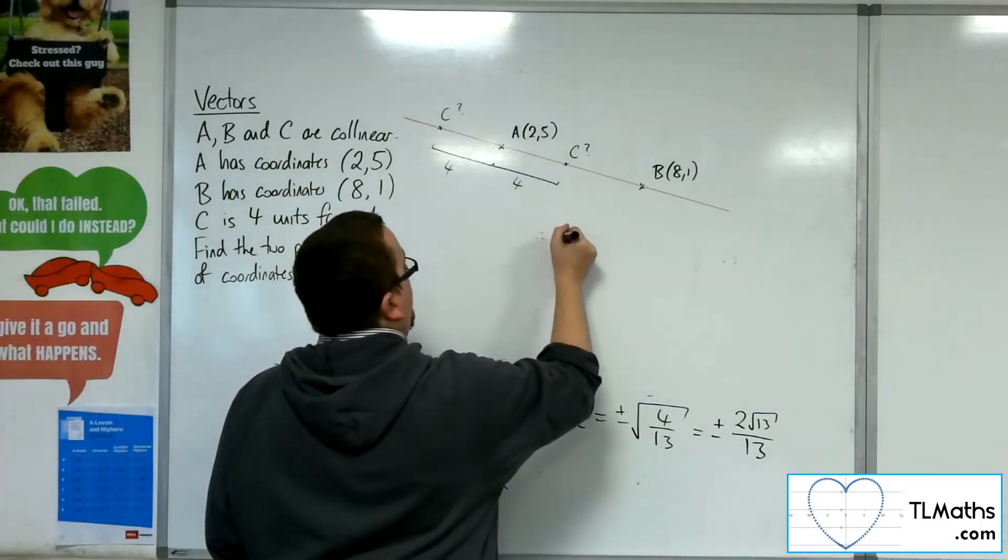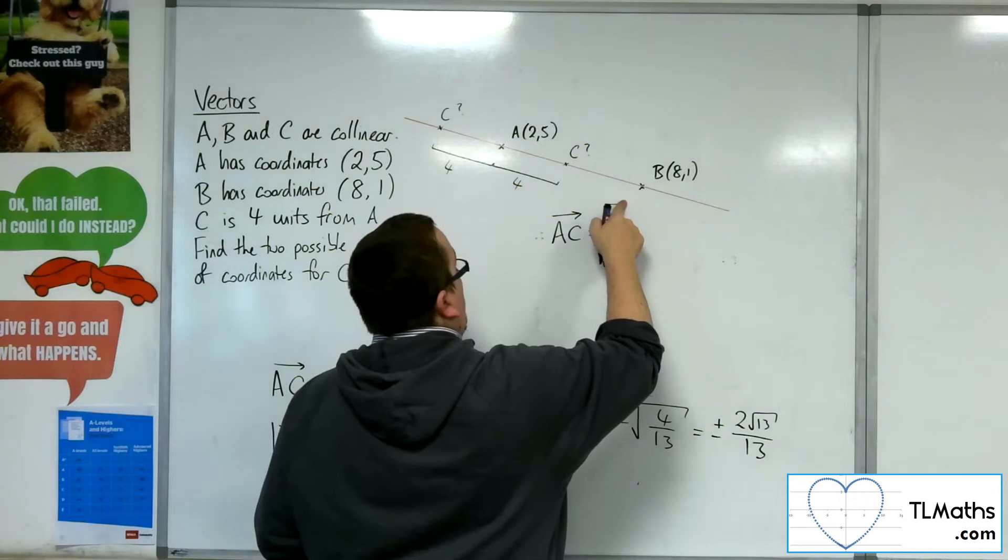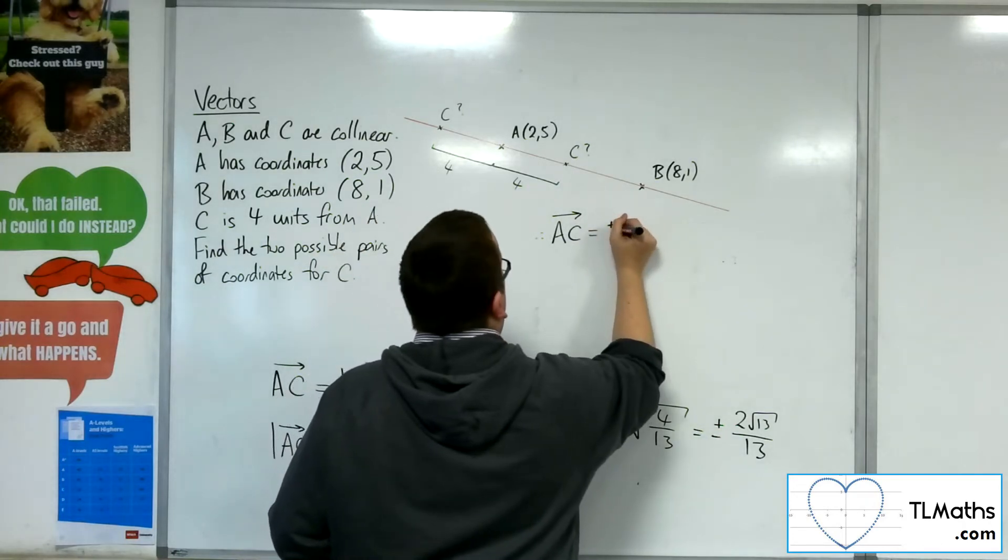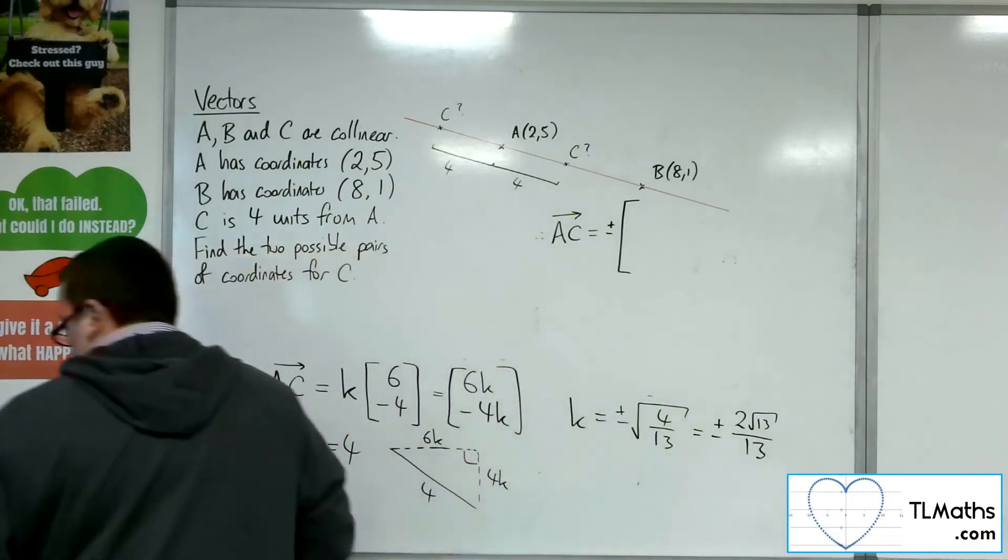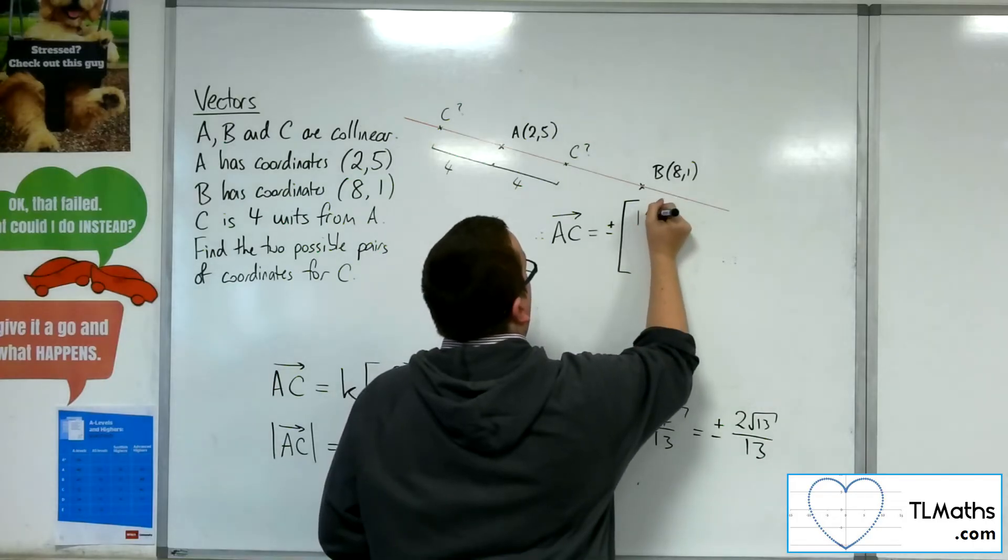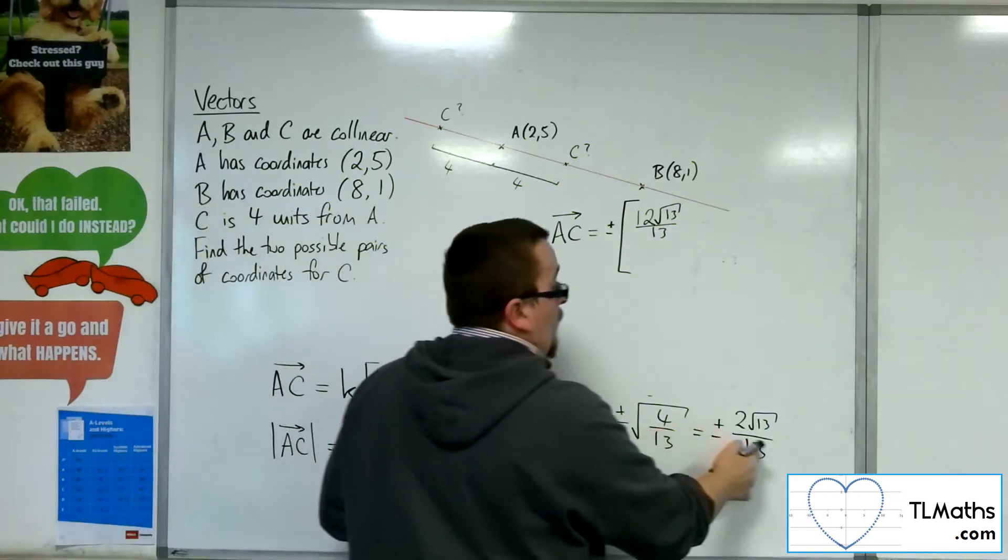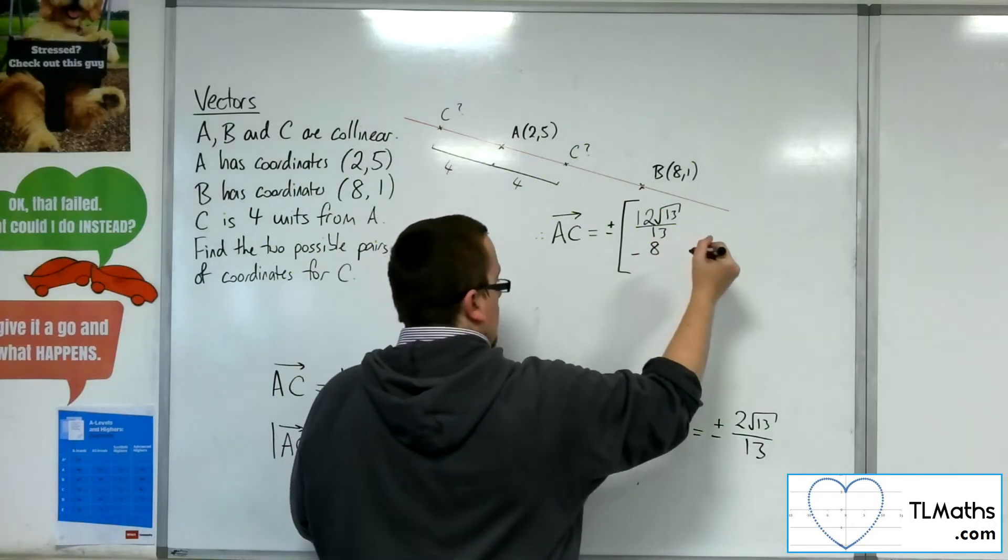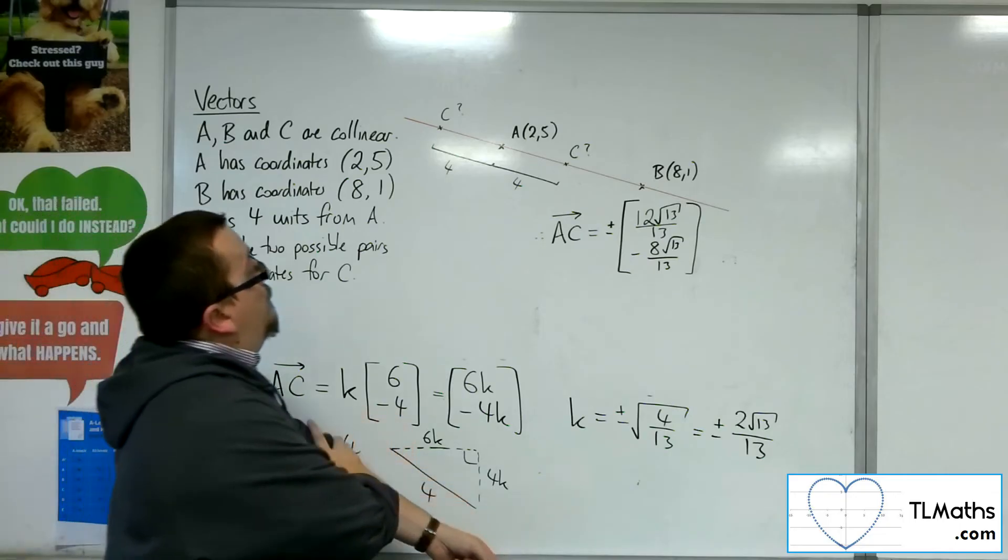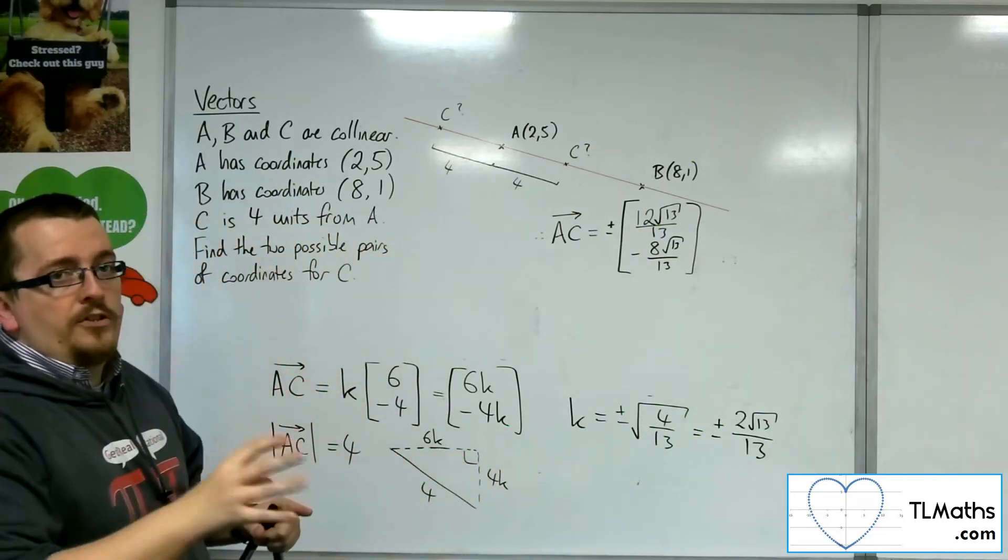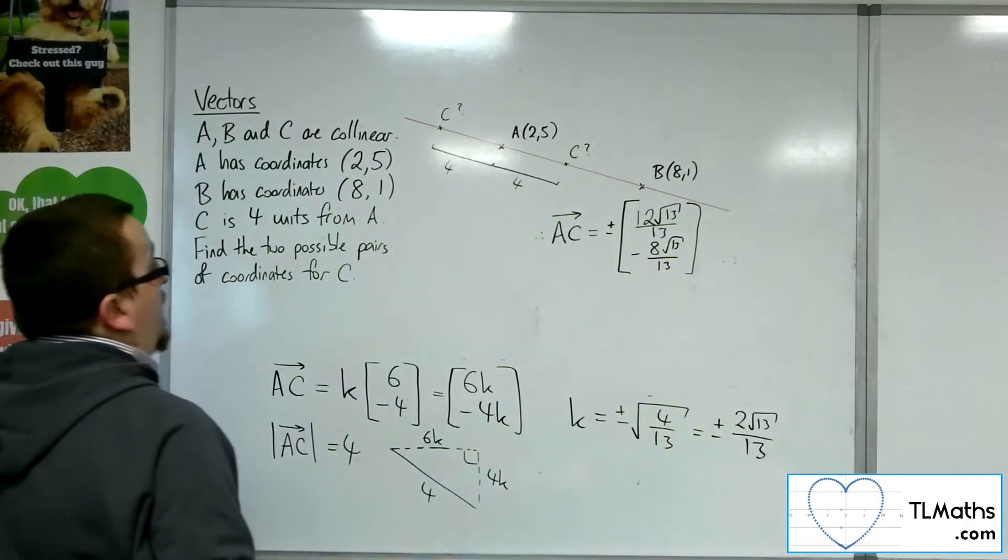So A, C, therefore A, C is going to be the vector. So it could be plus or minus, really, couldn't it, depending on the value. So plus or minus, 6 lots of this. So that would be, well, 6 lots of 2, so 12 root 13 over 13. And minus 4 lots of this. So minus 8 root 13 over 13. So that is the vector A, C. So if I want to get from A to C, that's my vector.